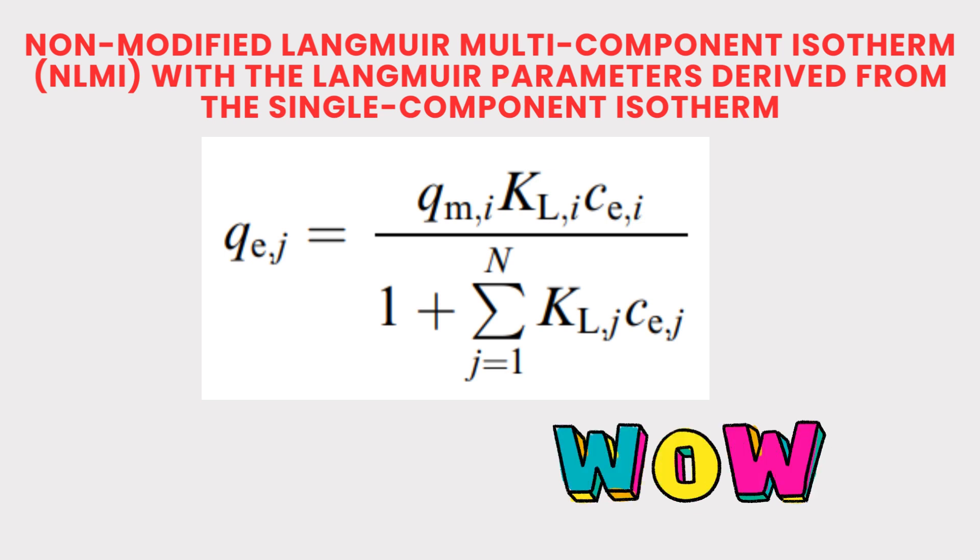Let us consider the first one, which is non-modified Langmuir multi-component isotherm with the Langmuir parameters easily derived from the single component system. The equation is qij equal to qmi times kli times cei divided by 1 plus summation of klj times cej. This is for i-component pollutant or adsorbate, and this is for j-pollutant or adsorbate.